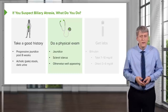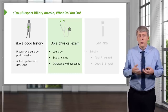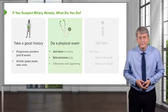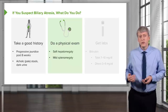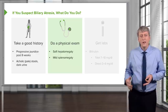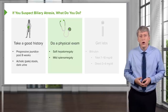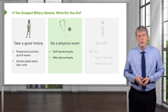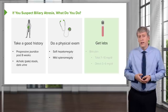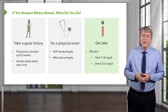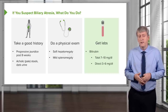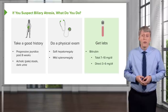Generally, these children are very well-appearing — they look okay, they're just turning yellow. You may notice a soft hepatomegaly, not a firm mass-like thing, but generally a large liver. They may also have a mildly enlarged spleen from vascular backup. On labs, you'll notice their total bilirubin levels are typically around 7 to 10, with a direct level of around 3 to 6.